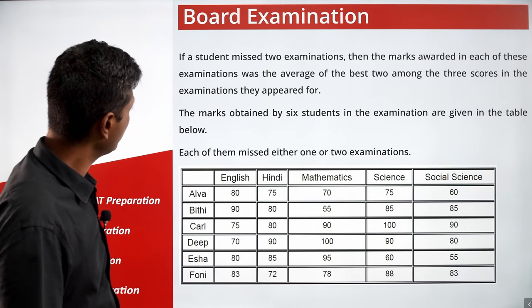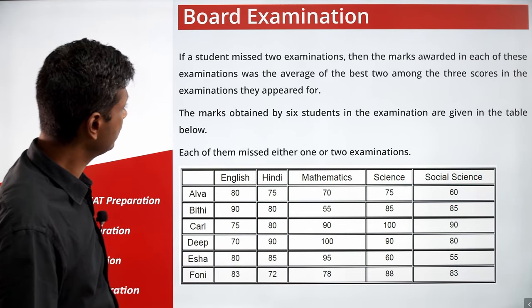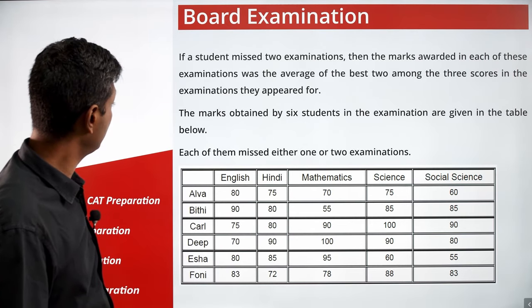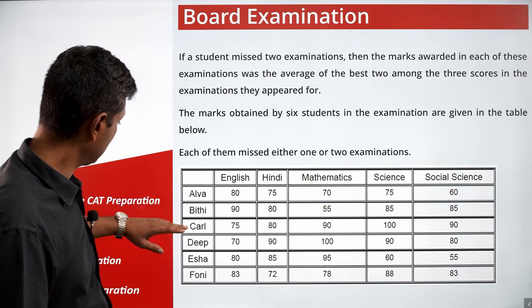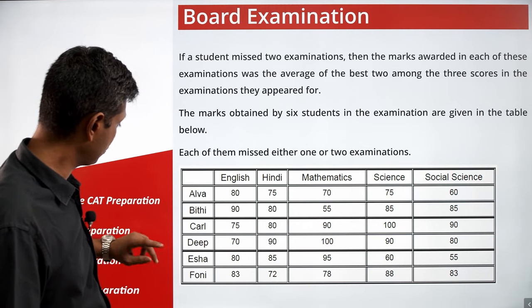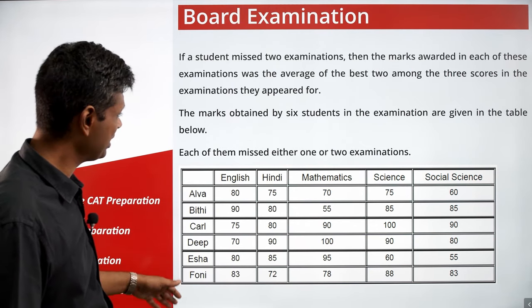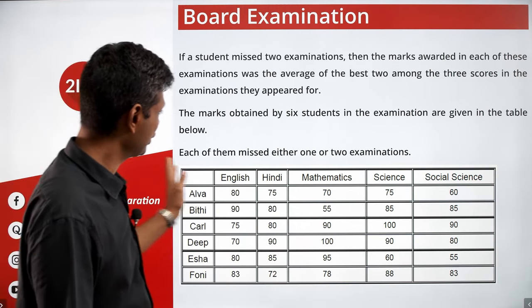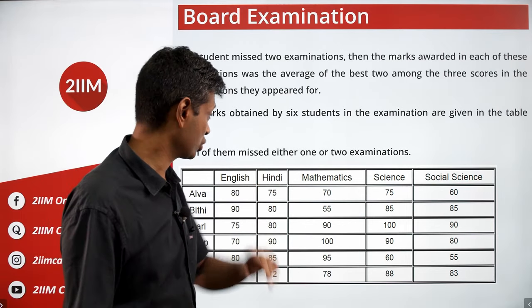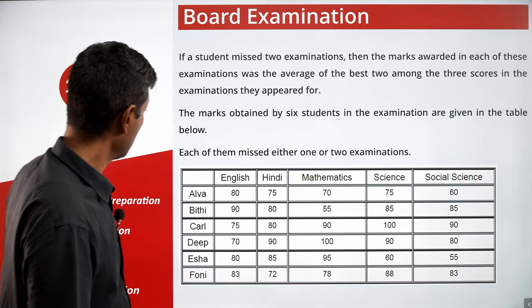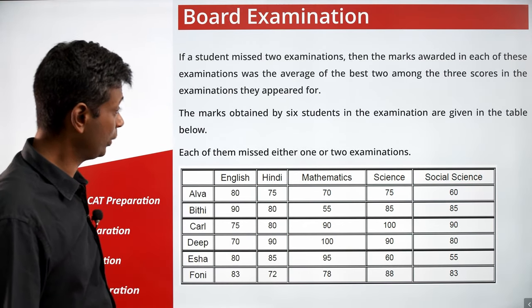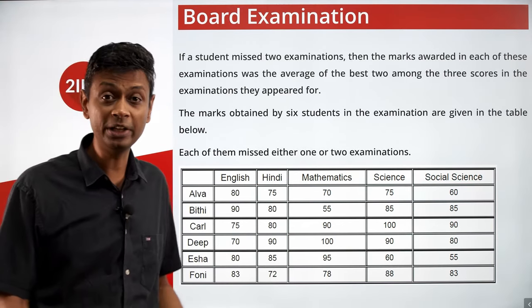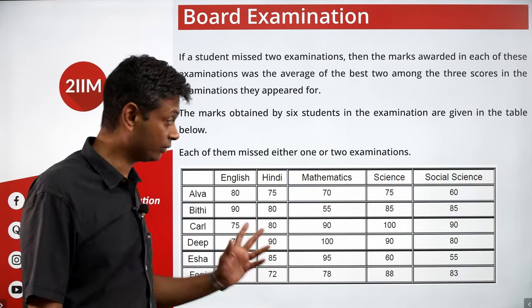The marks obtained by six students are given in the table: Alba, Biti, Kal, Deep, Isha, Phony — students A through F — across English, Hindi, Math, Science, and Social Science. Each of them missed either one or two examinations. Nobody has attempted all five.